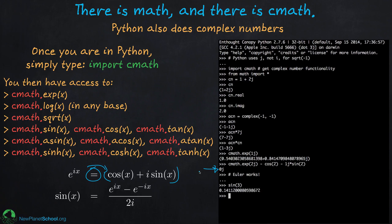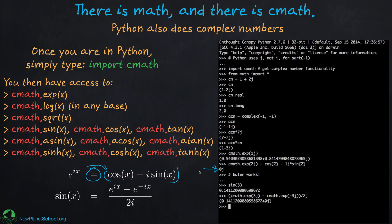Let's test the other Euler formula. `sin(3)` gives 0.141. Now the right-hand side: `(cmath.exp(3j) - cmath.exp(-3j)) / (2j)`. I forgot the parentheses, but that's no problem — I edit with the arrow keys — and I get exactly 0.141, proving that formula is also correct. Great capability in Python for complex numbers and all mathematical functions, just like with real numbers.